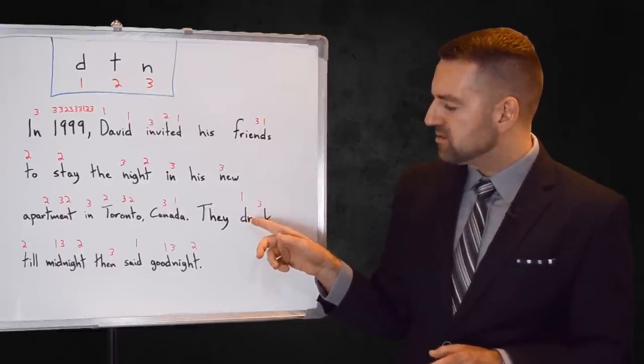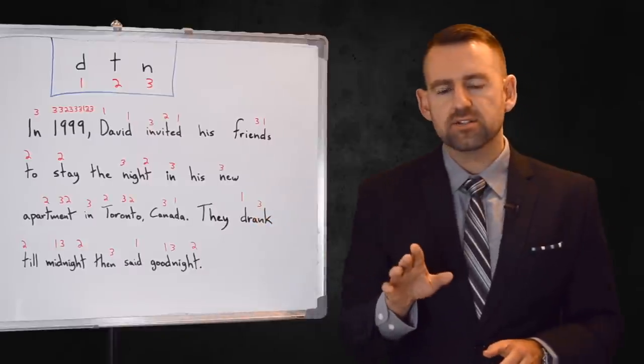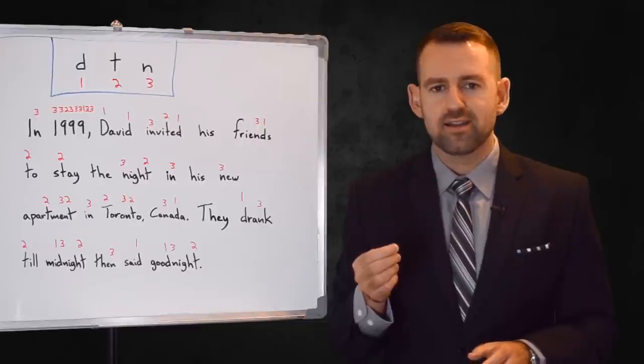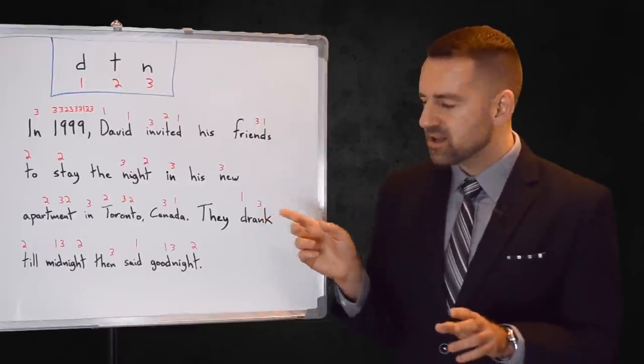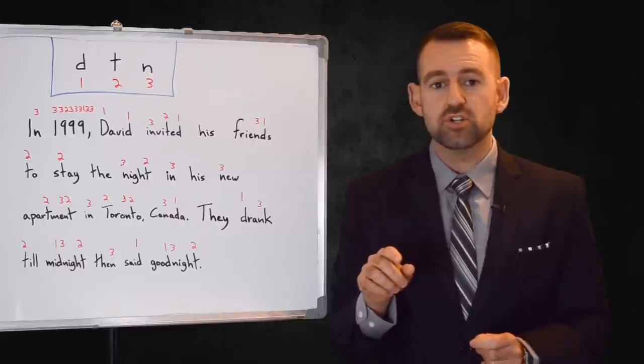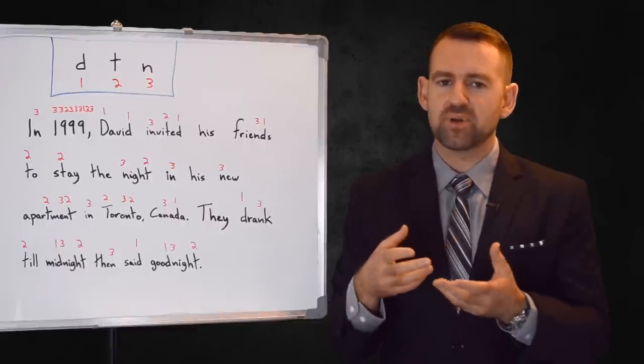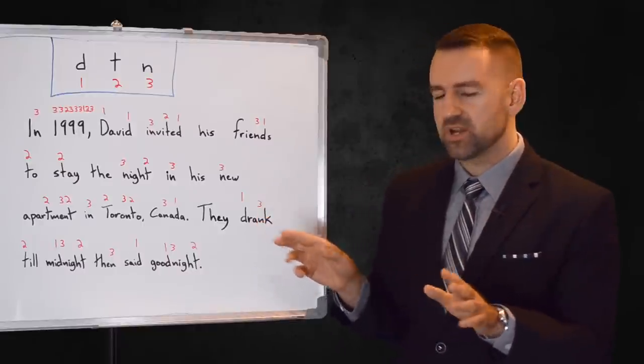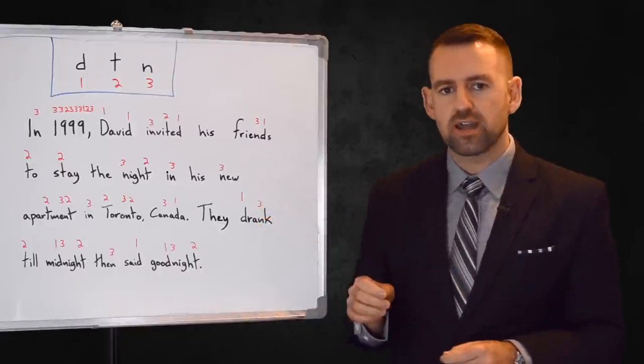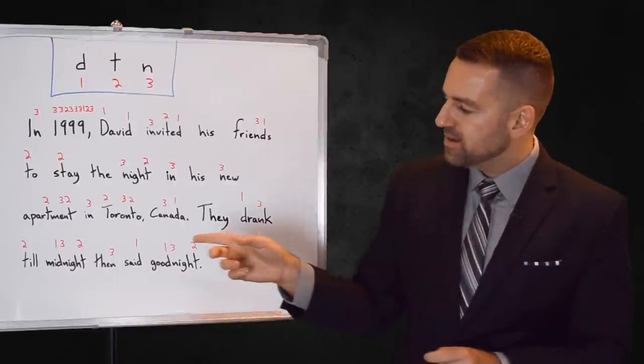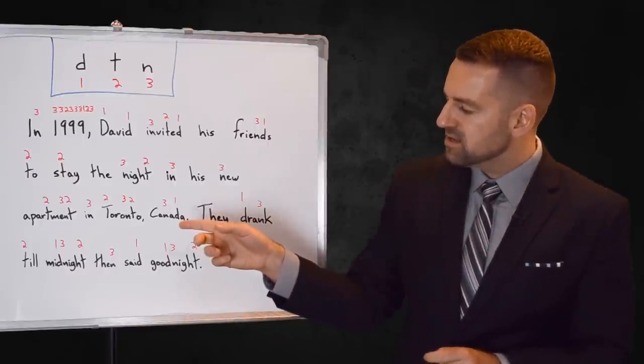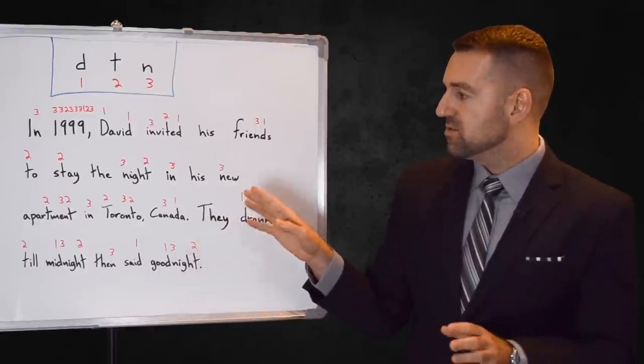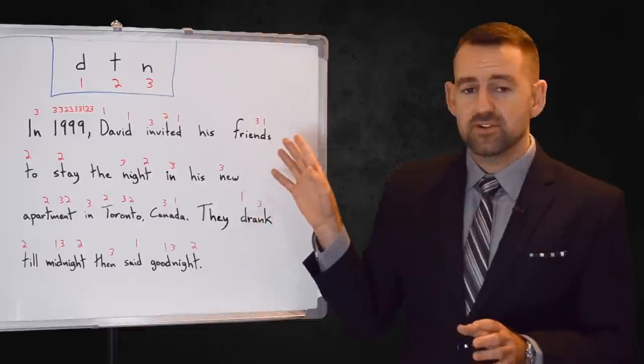They drank. Now when the D sound is in front of an R sound. Drank. Listen to how I say it. Drank. Drank. Drank. Then the D-R kind of turns into a J sound. Drank. That just happens when we say it fast. The D and the R sound. But it is a D sound. Drank. Till midnight. Then said goodnight. So there you have all your sounds.